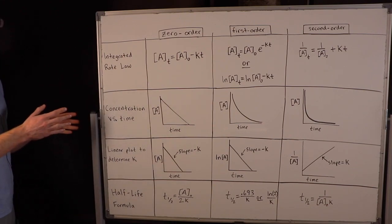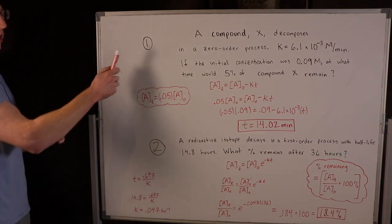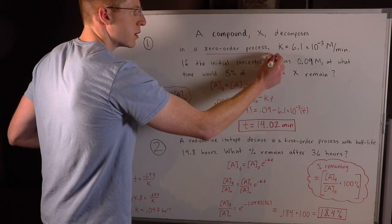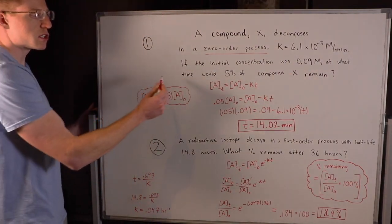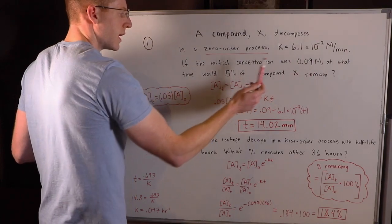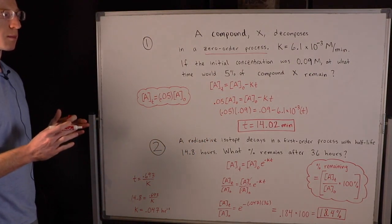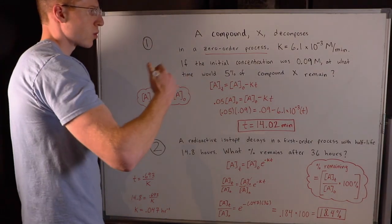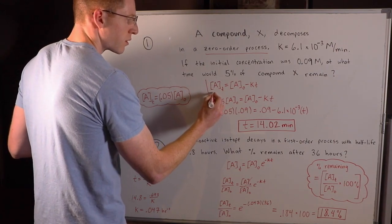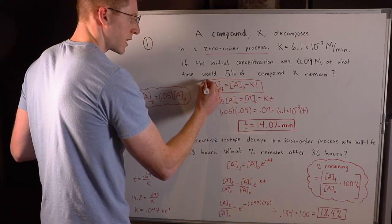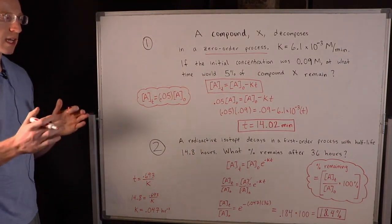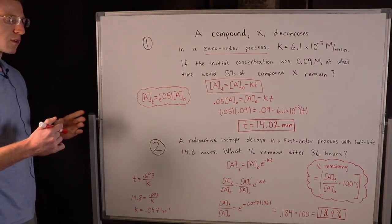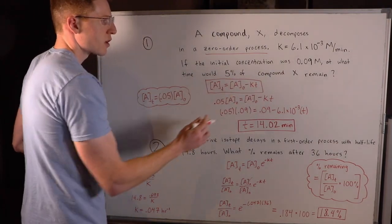In the following problems, you'll see how all of this is utilized. In number one here, a compound X decomposes in a zero-order process with this rate constant K = 6.1 × 10⁻³ M/min. If the initial concentration was 0.09 molar, at what time would 5% of compound X remain? The first thing you should think about is the integrated rate law for a zero-order process: [A]t = [A]₀ - Kt, and you should have that memorized from the table I just showed you.